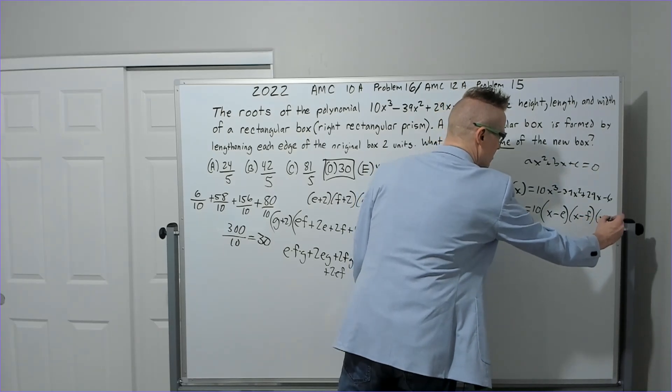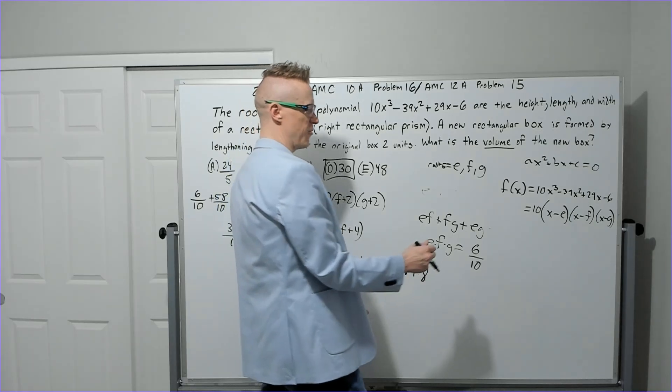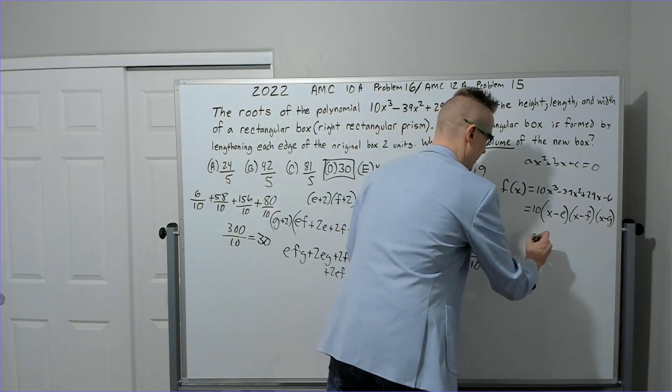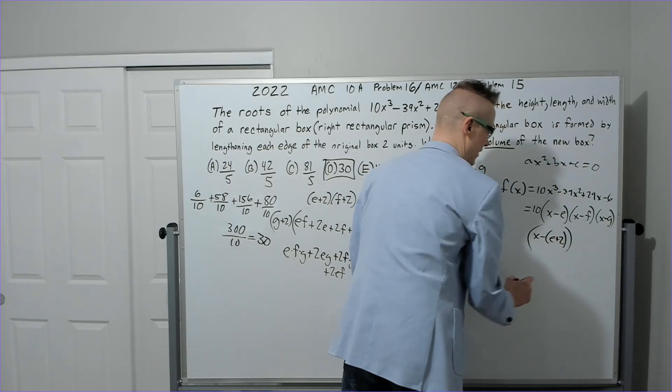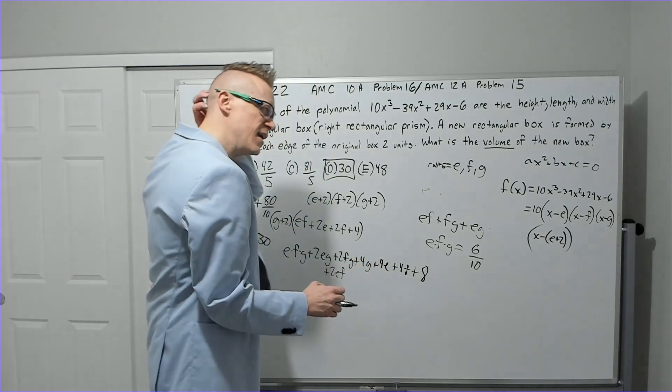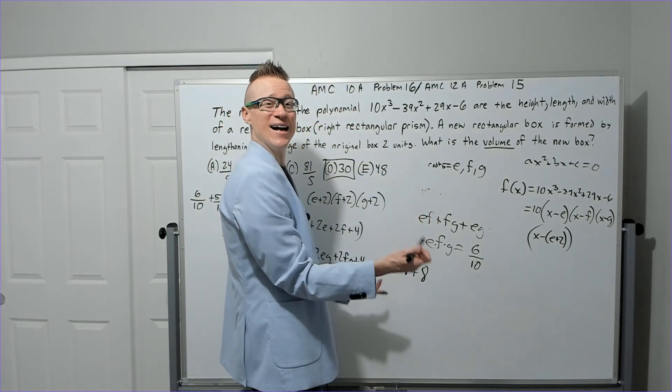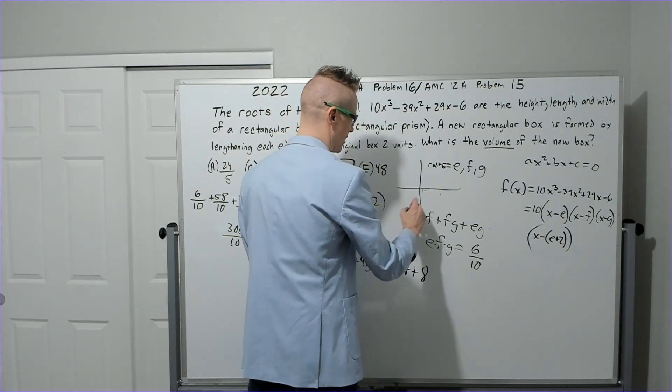And so if you think about it, if we want to add 2 to all of these roots, it now becomes x - (e + 2), kind of like this, right. And so think about it though—what are the roots? They're x-intercepts.